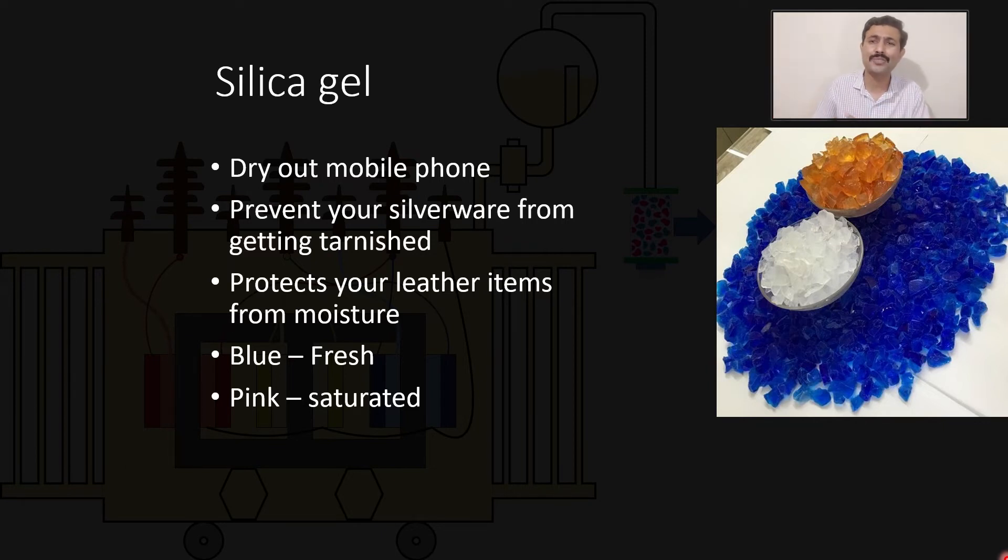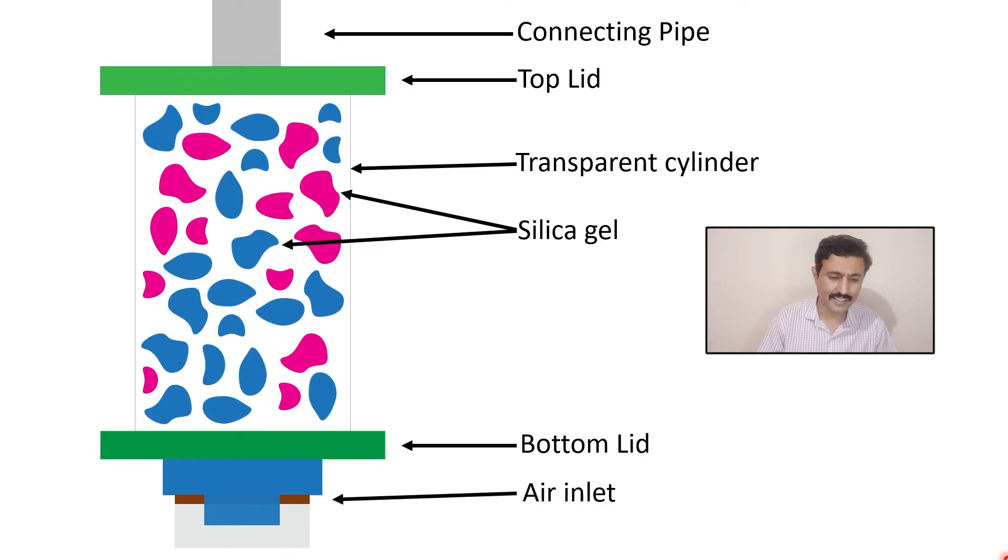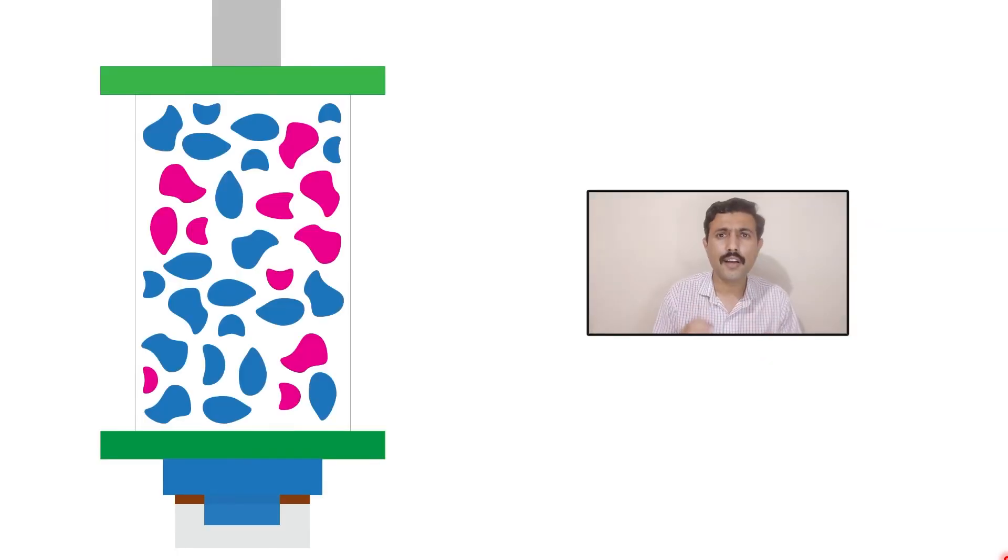Now here is the air inlet through which air flows in and out through the breather in the conservator tank. And then finally, the last item is oil cup in which the oil is filled.